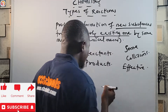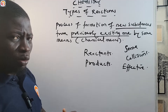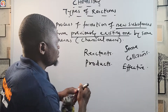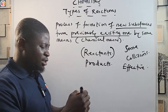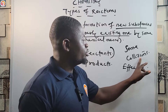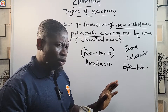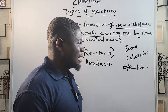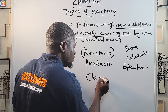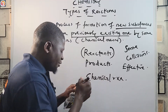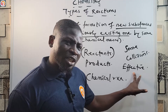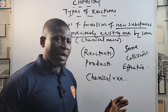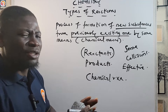The reactant particles must collide with one another in a manner that is effective. Reactant molecules — the previously existing substances — must be involved in some collisions that are effective. In other words, a collision is not said to be effective unless it leads to a chemical reaction; if it does not lead to a chemical reaction, it is not effective.